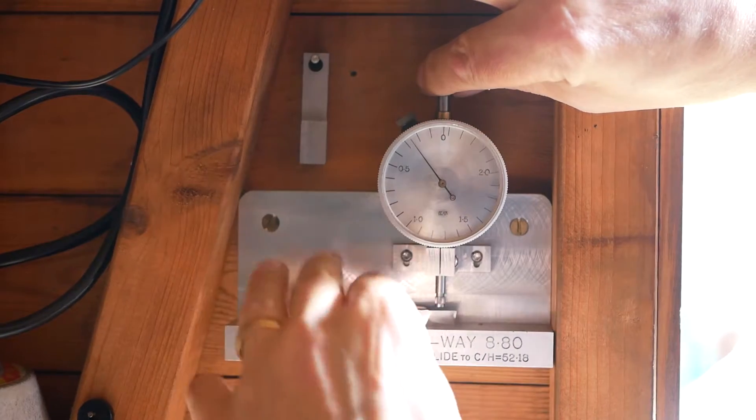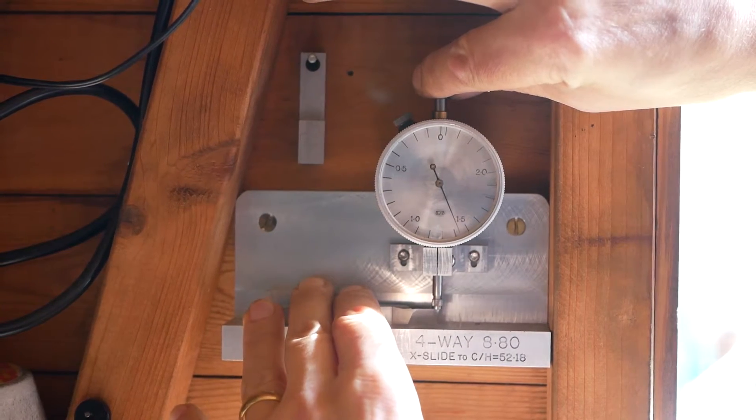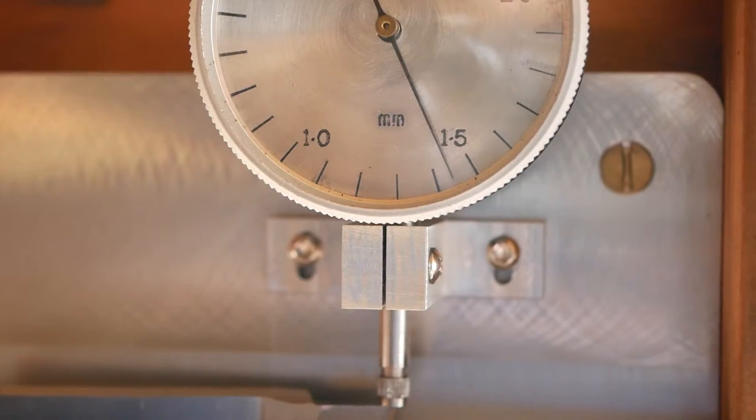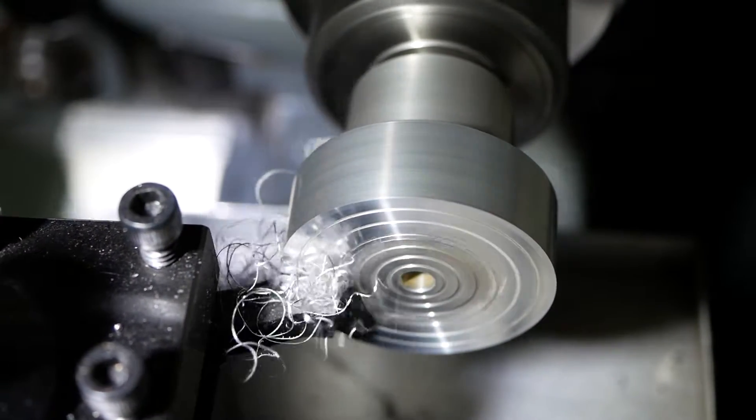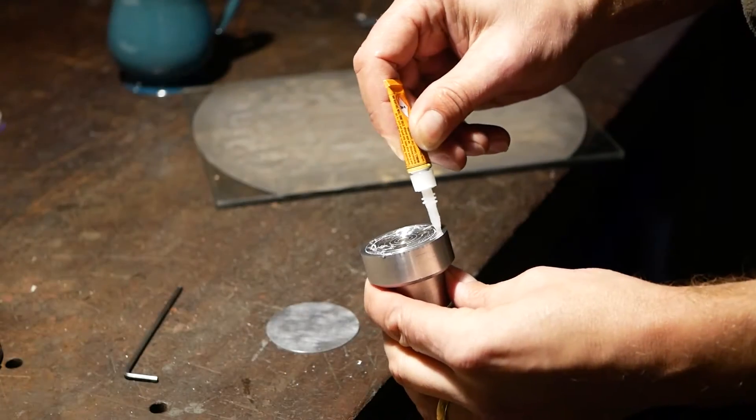In our previous video we discussed the four-way tool post and proposed a system to efficiently measure the required shim thickness to bring a tool to center height. In this video we'll show you how to go about making this dial.